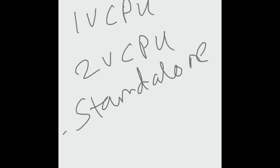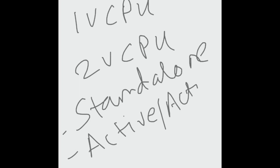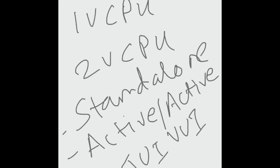For Cisco Unity Connection, the OVA depends on how many virtual CPUs you use — one vCPU or two vCPUs — and that determines the features available. There are two configurations: standalone or active-active. The number of ports supported — needed for the telephony user interface (TUI), voice user interface (VUI), and text-to-speech — depends on the vCPU type and Unity Connection features used.